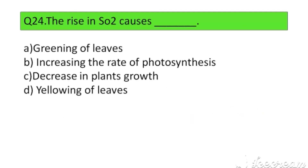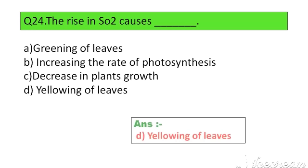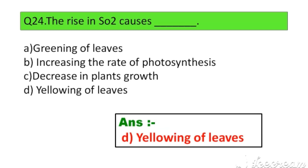Question number 24. The rise in SO2 causes: Option A. Greening of leaves, B. Increasing the rate of photosynthesis, C. Decrease in plant growth, D. Yellowing of leaves. The right answer is Option D: Yellowing of leaves.